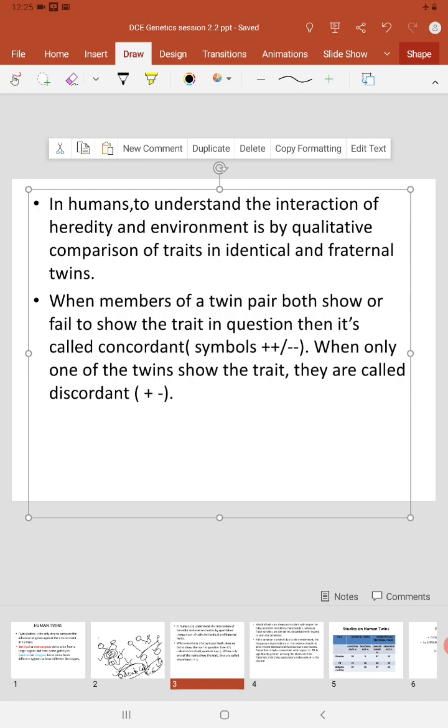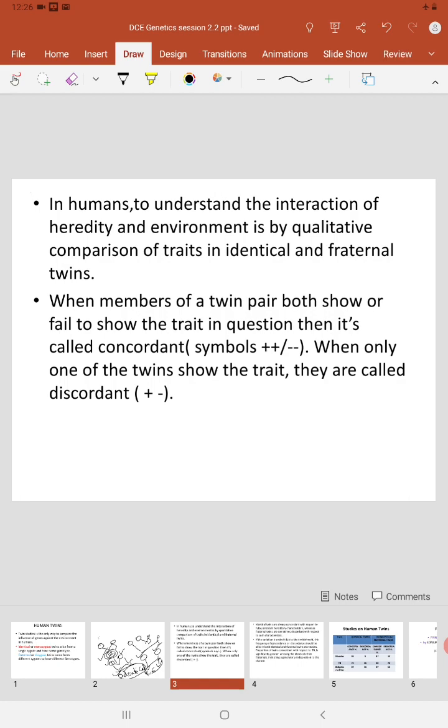Both are concordant, we say. When out of the twins, whether they may belong to identical or non-identical twins, when only one of the twins shows the particular trait and the other does not show, then it is called discordance or discordant. It is generally represented by one plus and one minus.